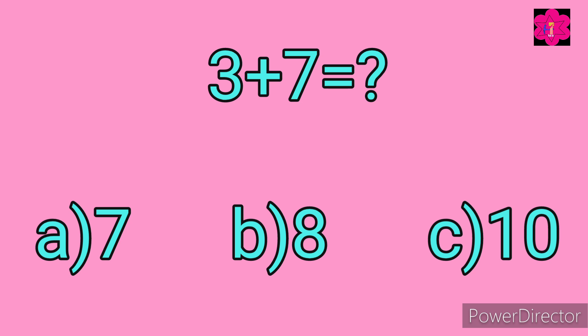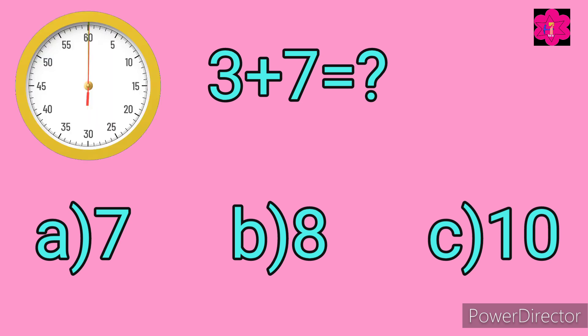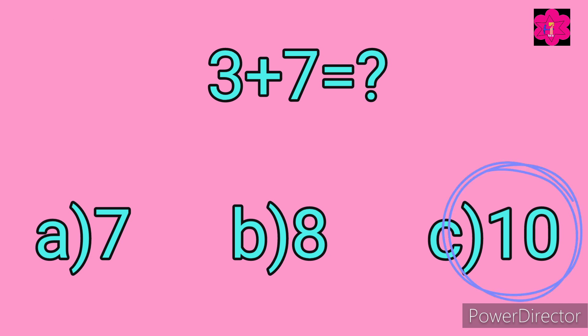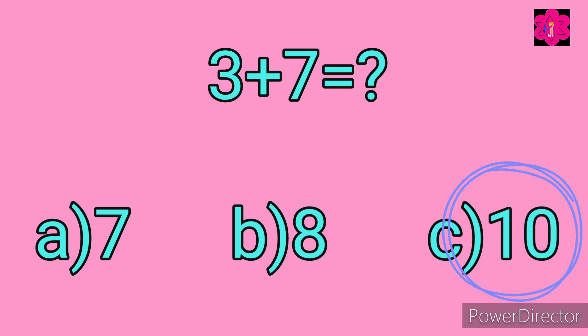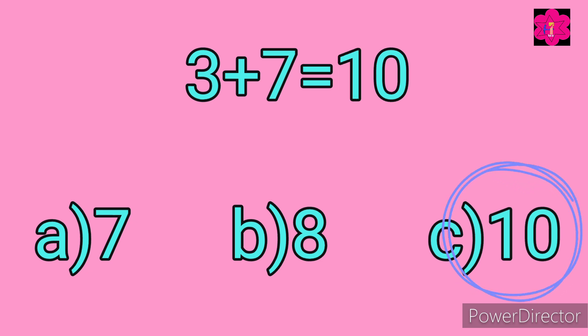Next sum: 3 plus 7 is equal to — your time starts now. Yes, correct answer is 10. 3 plus 7 is equal to 10.